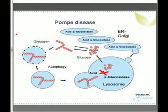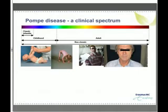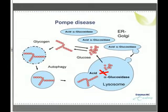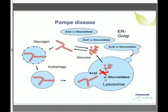I'd like to start with a brief overview of the pathophysiology of Pompe disease. Glycogen is the storage form of glucose, which is normally degraded in the lysosomes by the enzyme acid alpha-glucosidase. In Pompe disease, a deficiency of this enzyme leads to glycogen accumulation in the lysosome. This accumulation leads to cell damage, which is most pronounced in muscles of the proximal extremities and those involved in respiration, like the diaphragm.